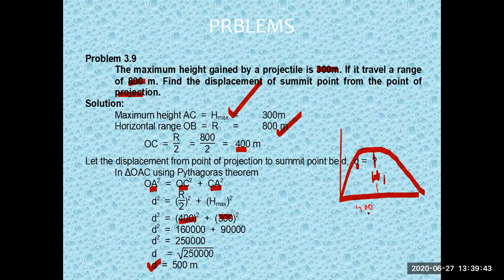The displacement of the summit point is what we need to calculate. If O is the point of projection, A is the summit point horizontally, and C is the summit, then by the Pythagorean theorem, OC squared equals OA squared plus AC squared — that is, base squared plus perpendicular squared.